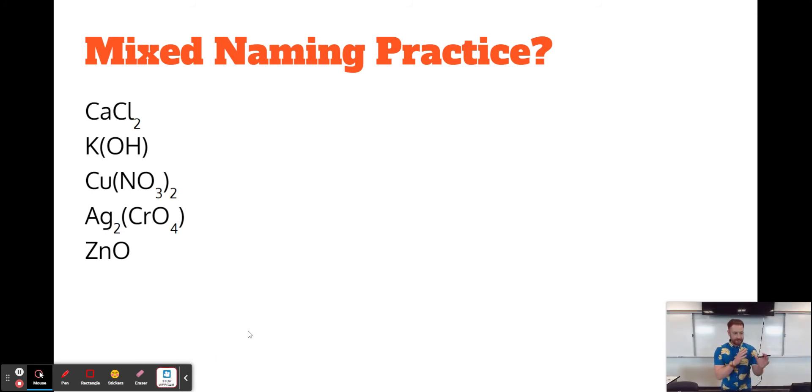All right. So this was probably a little bit more difficult than I let on because not only does this have you practice the transition metal Roman numeral thing, but there's also some binary ionic compounds in here. There's some polyatomic ions in here. It's kind of a mixed bag, which is why it's called mixed naming practice.